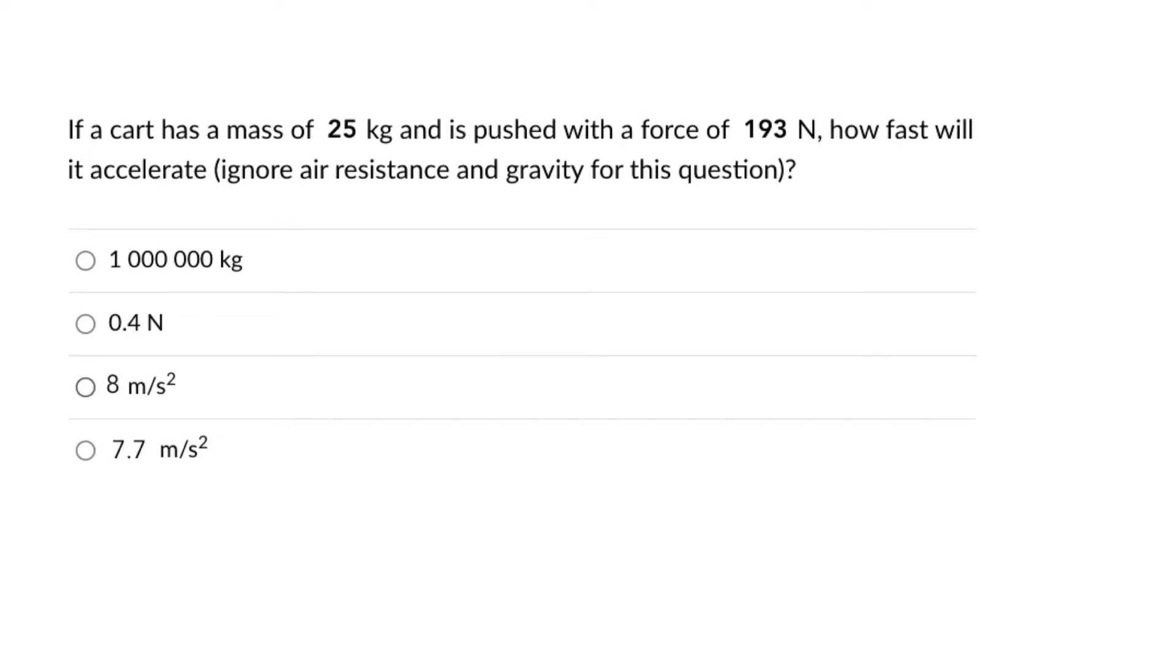In this situation, we have a mass that's given as 25 kilograms. We also have a force that's given, and we are told to determine how fast this object will accelerate when it's given that amount of force in a push. When you have mass and force and you're looking for acceleration, the equation you want to use is F equals ma, since this relates those three different parameters.